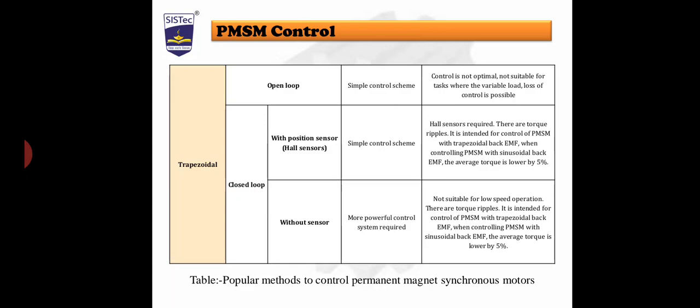For trapezoidal control without a sensor, a more powerful control system is required. The drawback is that this scheme is not suitable for lower speed operation. There is also torque ripple, and it is intended for the control of permanent magnet synchronous motors with trapezoidal back EMF. When controlling a permanent magnet synchronous machine with sinusoidal back EMF, the average torque is lower by five percent.